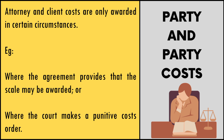B then proceeds to breach the contract and A sustains damages. A then issues summons against B for the payment of damages and, a while thereafter, judgment is granted in A's favour. If prayed for, A will be granted costs on the attorney and client scale as this was agreed to in the contract. A court may also award costs on the attorney and own client scale where the parties have agreed in writing to such scale being applicable.